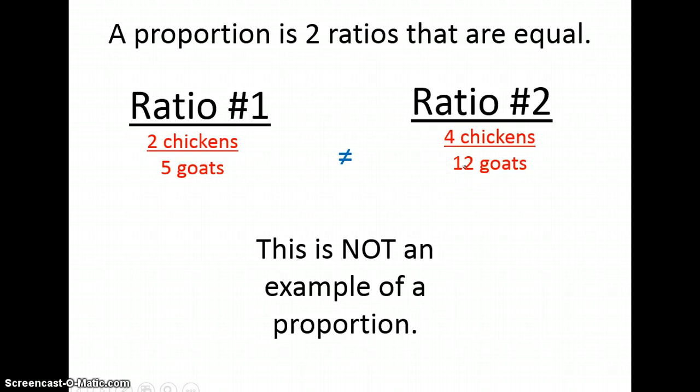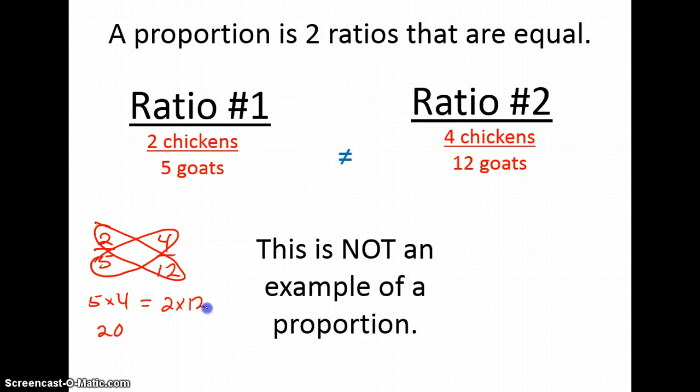I could have also tested it by doing cross products. I could have taken two to five and four to twelve and found the cross products. I would have found that five times four is twenty. It needs to equal two times twelve, but that's twenty-four, and they're not equal. So this is not an example of a proportion. As you can see, there are several ways that I can determine whether or not two ratios are in proportion.